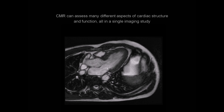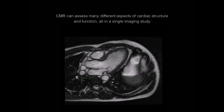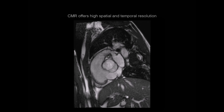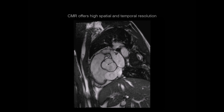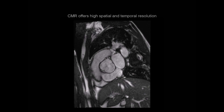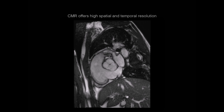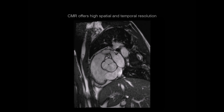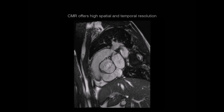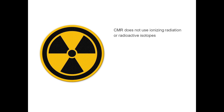CMR offers us the chance to assess many different aspects of cardiac structure and function, all in a single imaging study. CMR offers us high spatial and temporal resolution, which can be invaluable in assessing cardiac anatomy, such as in this example here of a patient with a pseudo-bicuspid aortic valve. Unlike nuclear cardiology and cardiac CT, CMR does not use ionising radiation or radioactive isotopes.